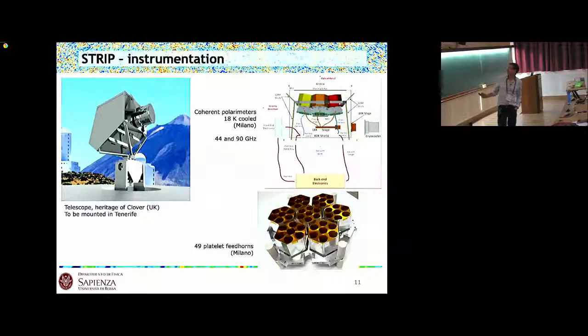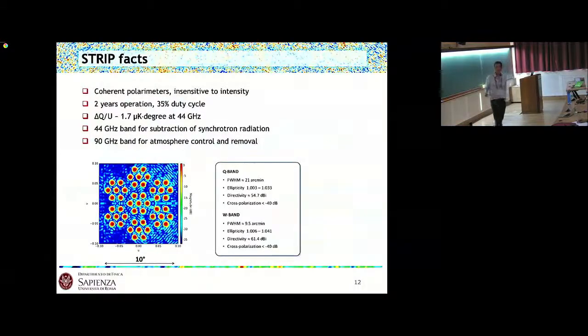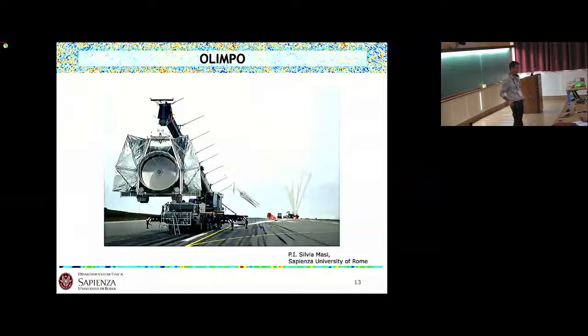The STRIP instrument is a telescope which used to be of the Clover experiment in the UK, and this is planned to be mounted in Tenerife. It uses SQUID polarimeters at 18 Kelvin for photon acquisition. It's 44 and 90 gigahertz and is made with 49 platelet feedhorns for the 44 gigahertz plus a few radiometers for the 90 gigahertz. The 90 gigahertz is used mainly to control the atmospheric signal, while the 44 gigahertz band is for subtraction of synchrotron contamination from the balloon. The sensitivity goal for Q and U is about 1.7 microkelvin-degree in this low-frequency part. The idea is to operate for two years with a 35% duty cycle.